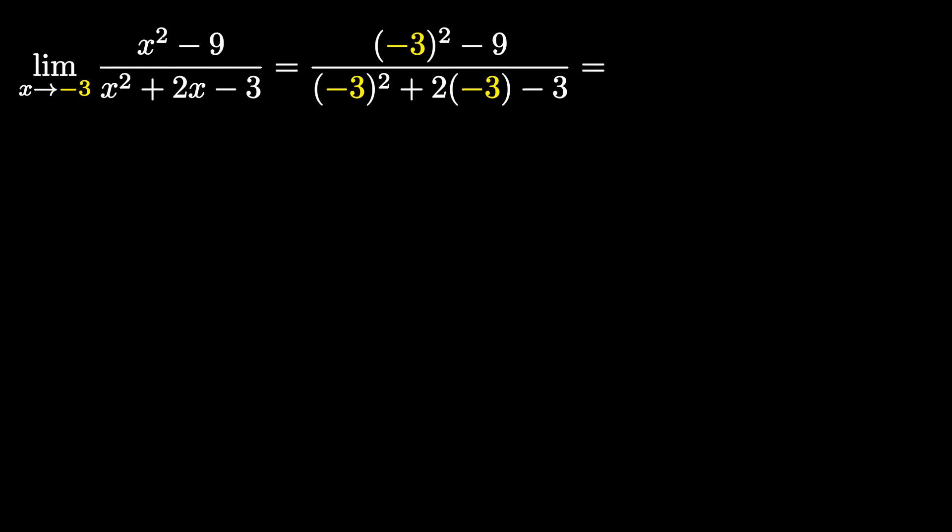Now, let's simplify the top. So negative 3 squared is 9, and then 9 minus 9 is 0. And then moving to the bottom, negative 3 squared is 9, and then 2 times negative 3 is negative 6, 9 minus 6 is 3, and then 3 minus 3 is 0. And when we evaluate this, we get 0 over 0, which is our lovely indeterminate form.